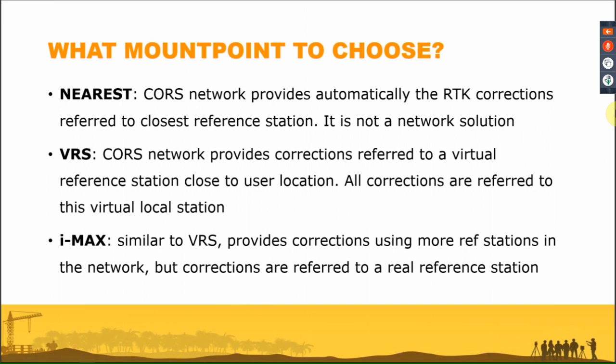Once connected to the GNSS network server, the network provides different types of correction services. We can understand the product type directly from the mount point name. There are three different types of mount points. 'Nearest' means the network automatically provides correction from the closest reference station — not a true network solution. The further you are, the bigger the error, similar to a single reference station correction. 'VRS' means the network creates a virtual reference station close to your position, calculated from all stations around your cell.